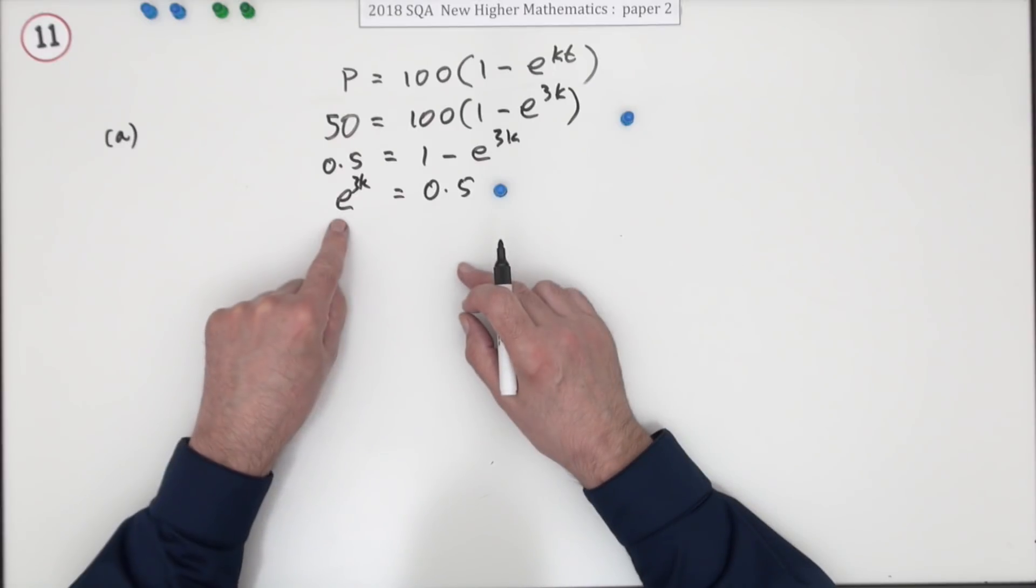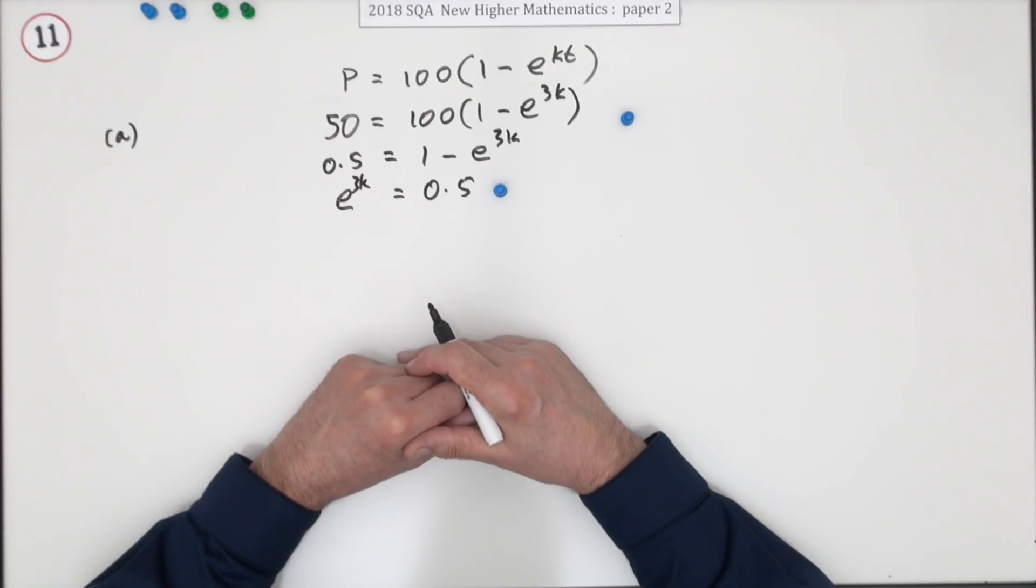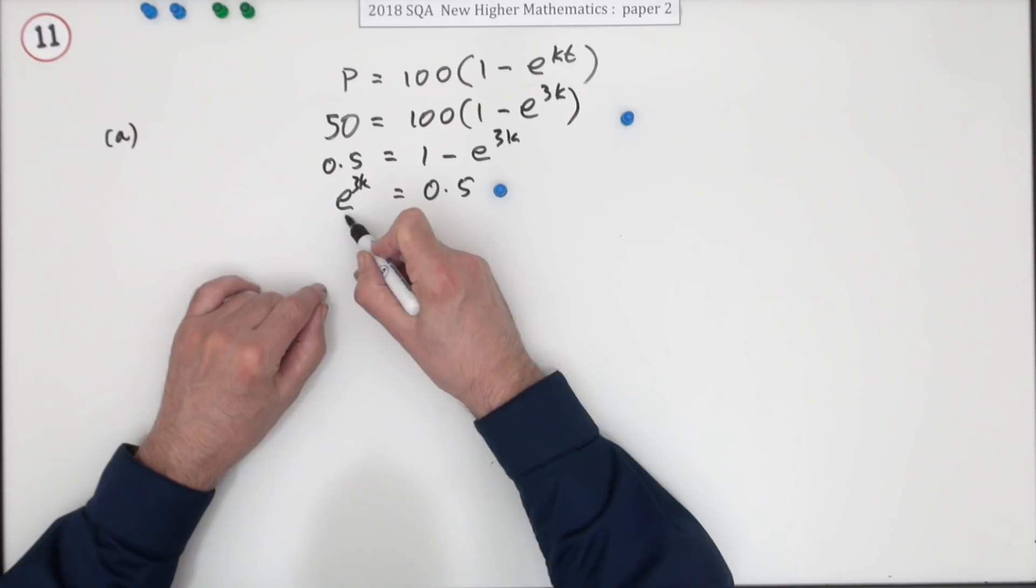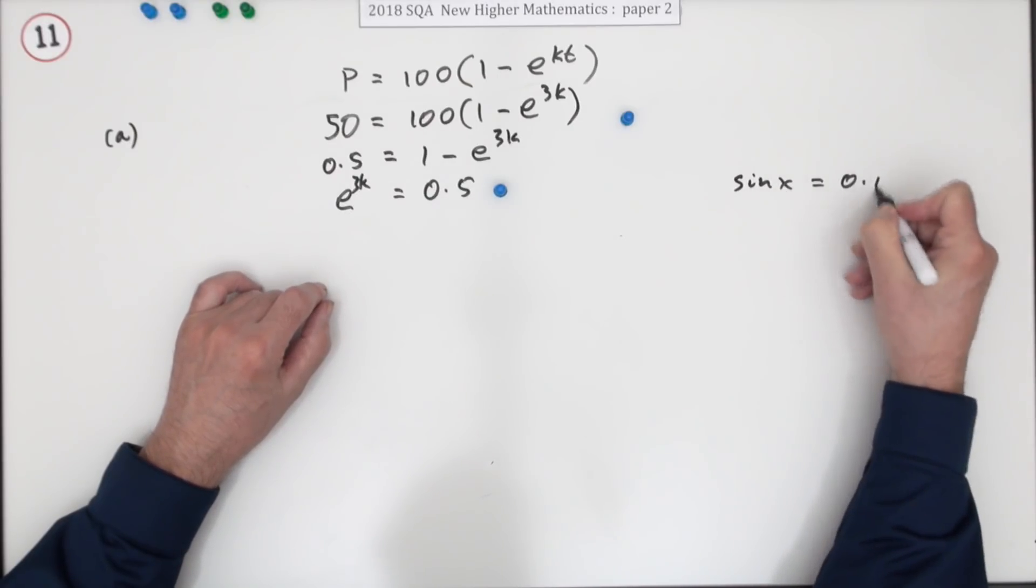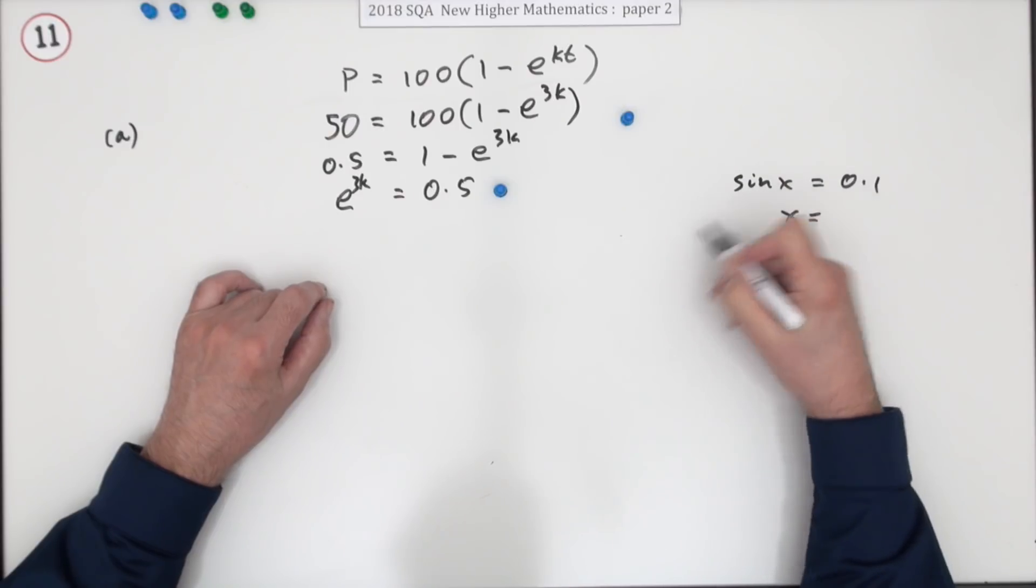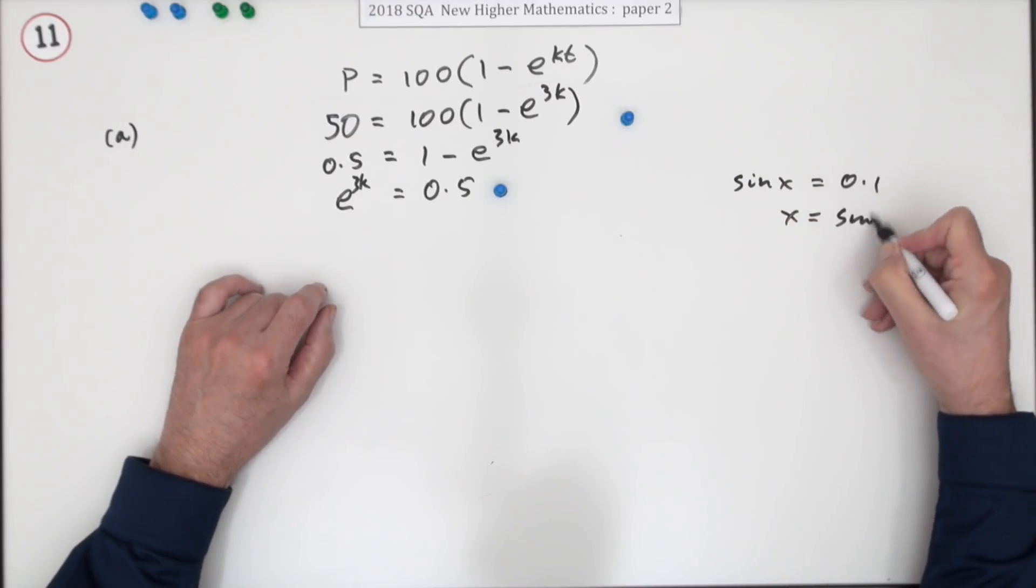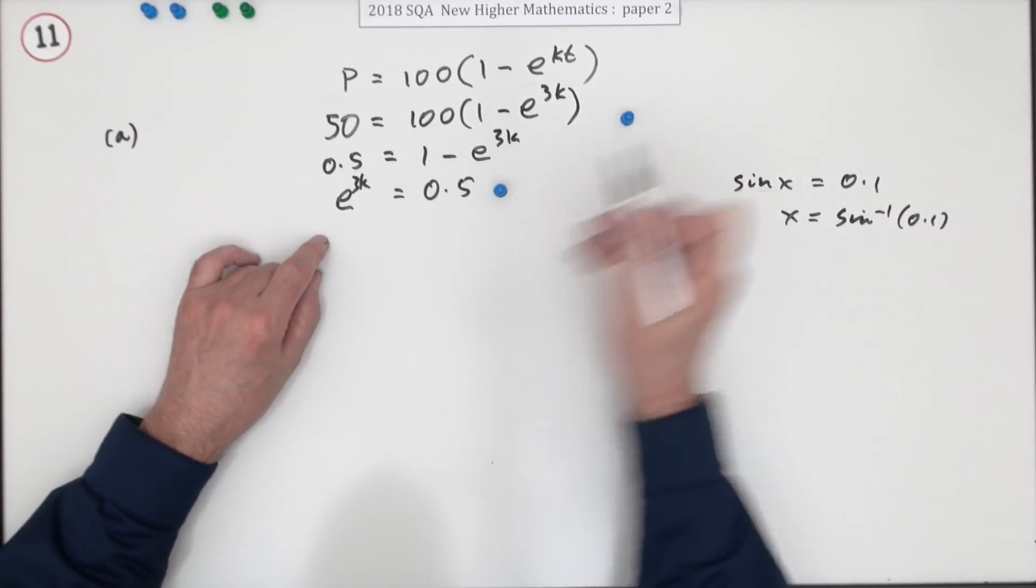Now you've got to get rid of that e. Now there's several ways. The simplest way is to do the inverse. If you had sine x equals 0.1, your next line would be immediately so apply the inverse. Will be inverse sine of 0.1. Same here, the inverse of exponential is log.